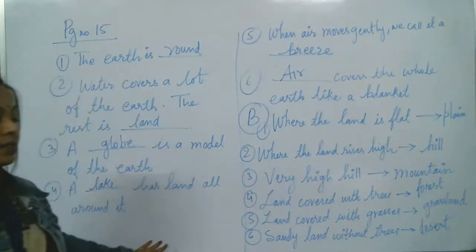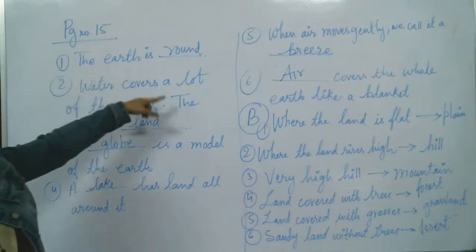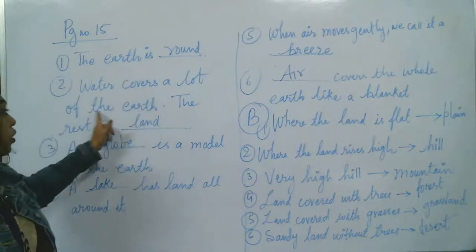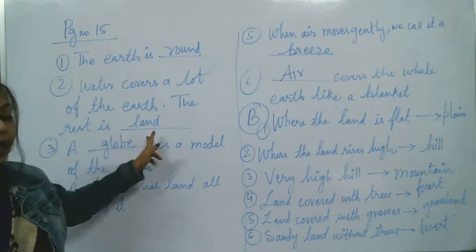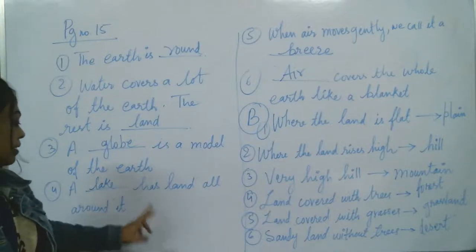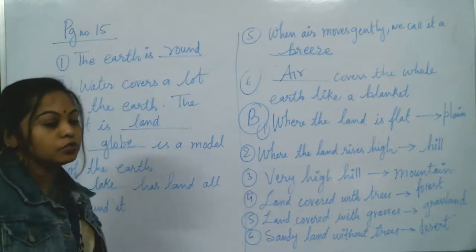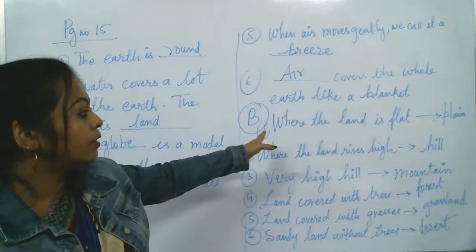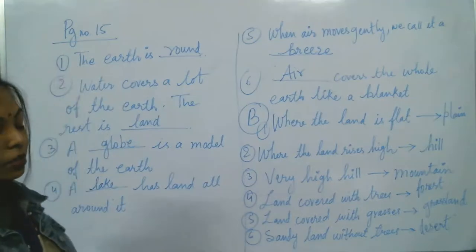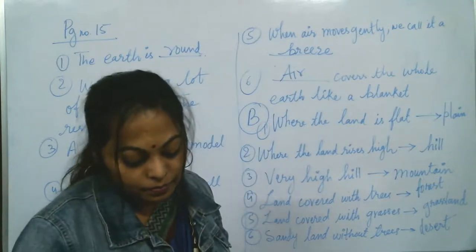Now we have completed this exercise. Here are some important sentences from the lesson: The earth is round in shape - it is not square. Water covers a lot of the earth, but the rest is land. A globe is a model of the earth. A lake has land all around it. When air moves gently, we call it a breeze. Air covers the whole earth like a blanket. Then we did match the following.